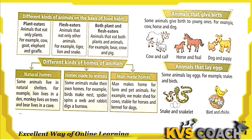Let's start with the first topic: different kinds of animals on the basis of food habit. On the basis of food habit, there are three types: first is plant eaters, second is flesh eaters, and third is both plant and flesh eaters.